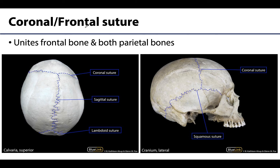Starting with the coronal or frontal suture. This is going to unite the frontal bone with the parietal bones — those paired parietal bones. I like to think that the coronal suture will sit where a tiara or a crown would sit. You can see the frontal bone and one of the parietal bones right here.